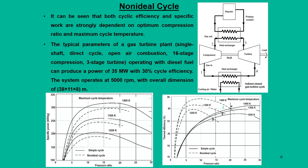A typical gas turbine plant — a single-shaft direct cycle open-air combustion system with 16-stage compression and 3-stage turbine — can operate with diesel fuel to produce 35 megawatts of power with a cycle efficiency of 30 percent, operating at 500 RPM. Our main intention is to determine what power is derived from the cycle and what the cycle efficiency is, along with the maximum temperature at the turbine inlet point.